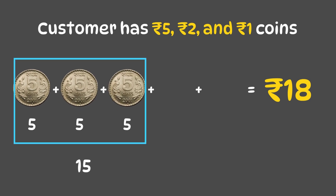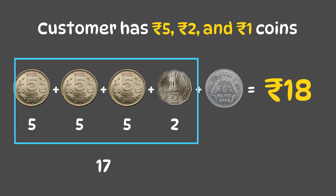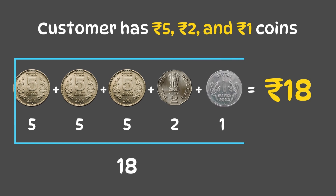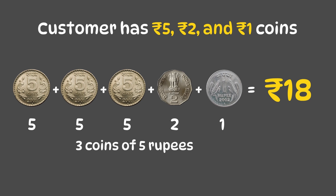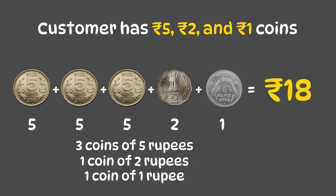Now we need 3 rupees more. So 15 plus 2 equals 17, plus 1 equals 18. So that's 3 five-rupee coins, 1 two-rupee coin, and 1 one-rupee coin.